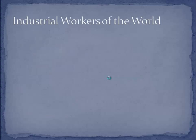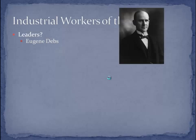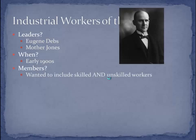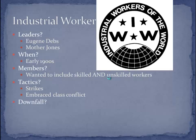Another union active at the same time as the AFL is the IWW, or the Industrial Workers of the World. They had two very famous leaders: Eugene Debs, who became very popular in the 1910s as a member of the Socialist Party, and also Mother Jones. They were active in the early 1900s. Like the Knights of Labor, the IWW included skilled and unskilled workers. Their tactics were very different — they embraced strikes and class conflict, rich versus poor, factory owners versus workers. The IWW did not last very long; their downfall came largely because of World War I, as they went on strike during the war. Their nickname became 'I Won't Work.' So they did not last very long.